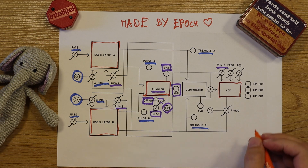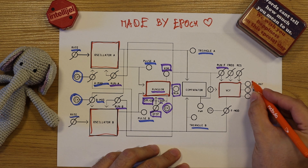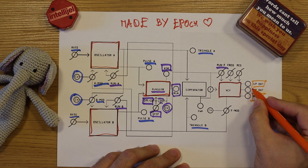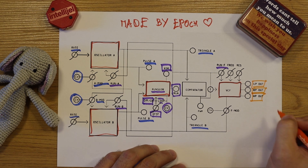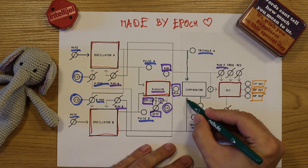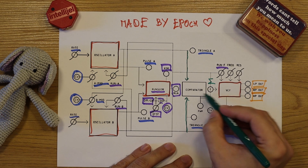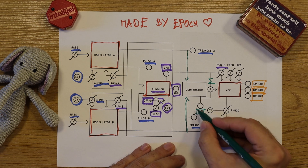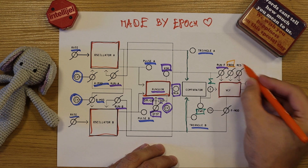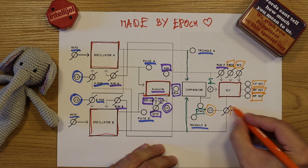Now let's see the filter. Since it is a state variable filter, it has low-pass and high-pass outputs with 12 dB curves, and a bandpass output with a 6 dB curve. The filter's input is a mix of a pulse width modulation wave derived from the triangle waves of each oscillator and the Wrangler signal itself. We can use the pulse width modulation wave via its own output. The filter has a cutoff and resonance control, and it has a CV input as well with internal modulation from triangle B.